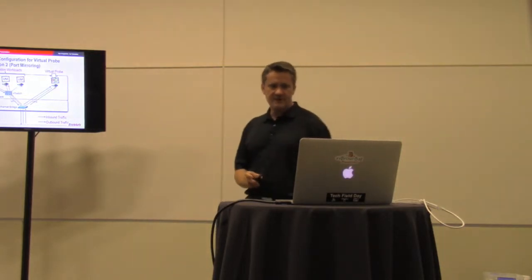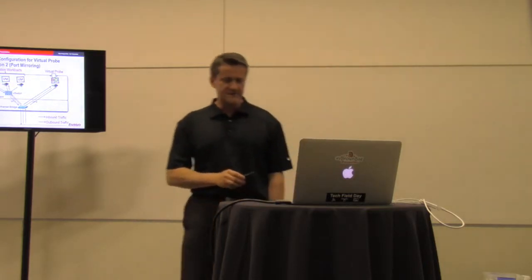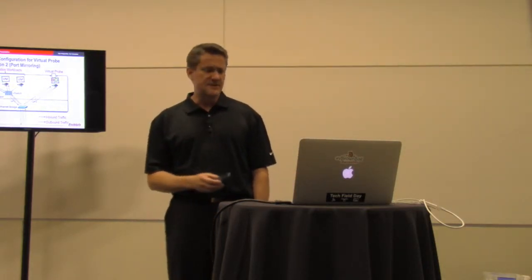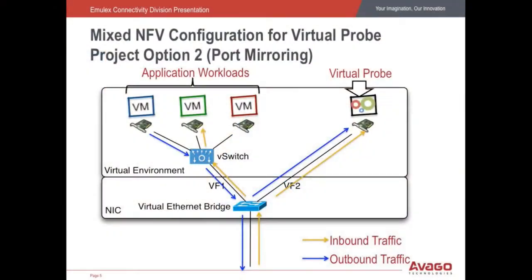Another option is port mirroring. Part of Emulex is a company called Endace, which has been doing really good data capture and security solutions for some time. This is how you can do a virtual tap or a virtual probe, where the traffic is routed differently. I bring traffic up, send a copy to the virtual probe application workloads, and the vSwitch for the application workloads forwards packets to the right place. The virtual probe is then able to sniff, inspect, capture, and forward data as needed. This is another solution we see in the market.